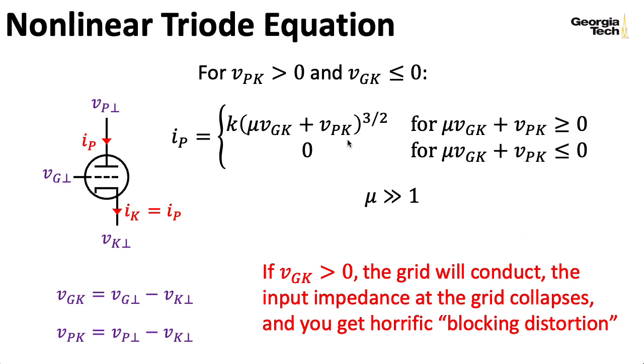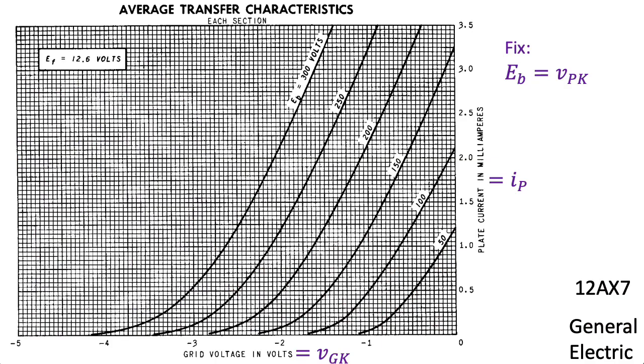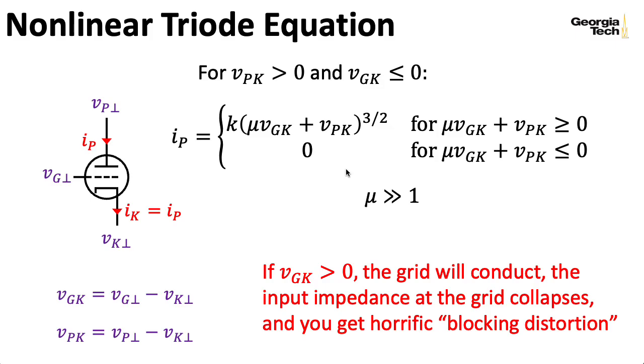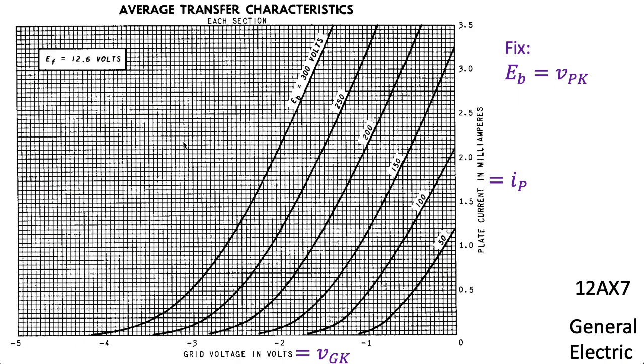Now, truth be told, we're not really going to use this equation very much. And as far as I can tell, most other people don't use this equation very much either. Instead, what you do is you go to the data sheet and you look at some curves. So there's three different quantities here. There's the plate to cathode voltage, the grid to cathode voltage, and the plate current. And we only have two dimensions. So we have to pick things to fix and then plot the other things. So here's a transfer characteristic curve. This is also called a transconductance curve.